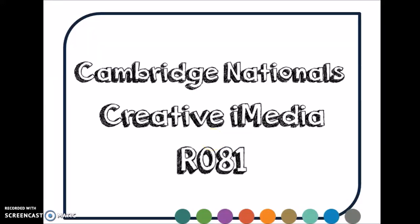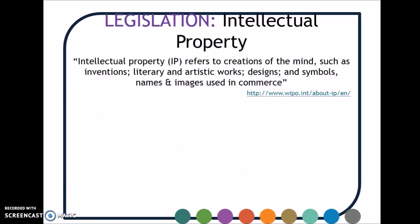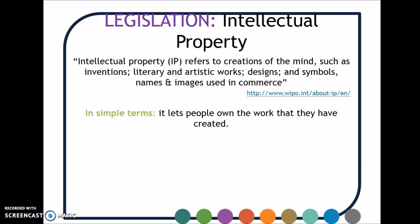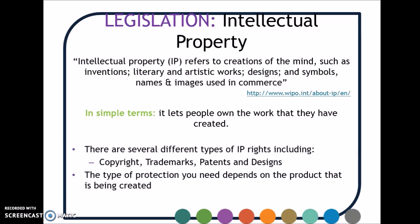This podcast for R081 focuses on different pieces of legislation you need to know about. The first is intellectual property, which refers to creations of the mind such as inventions, literary and artistic work, designs, symbols, names and images used in commerce. Put simply, it lets people own the work they've created. There are several types of IP including copyright, trademark, patent and design. The type of protection needed depends on the product being created. We'll now focus on copyright and trademark.